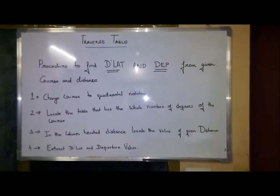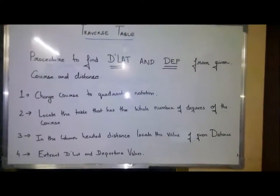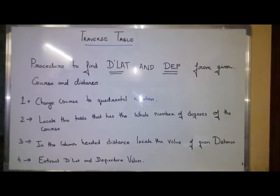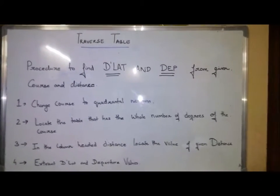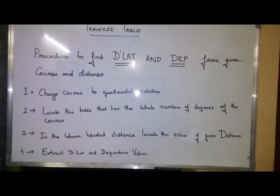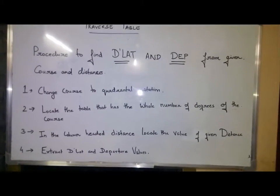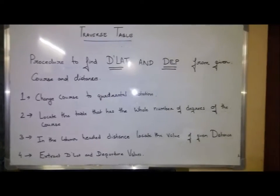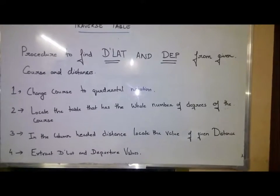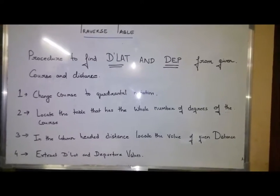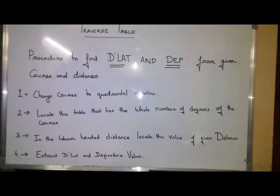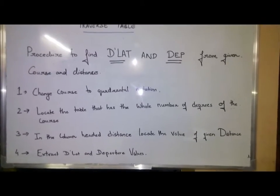Procedure to find DLAT and departure from given course and distance. First step, you have to change course to quadrantal notation. Second step, locate the table that has the whole number of degrees of the course. Third, in the column headed distance, locate the value of given distance. That is the distance given in the question. You have to use that distance, check under the column, and against that distance you have to extract DLAT and departure values.